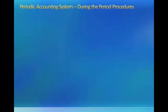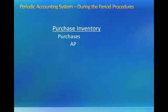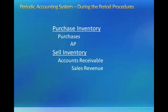In the Periodic system, we purchase inventory by debiting purchases and crediting accounts payable. The difference here, when compared to the Perpetual system, is that the inventory account is not debited — the purchases account is. When we sell inventory, we debit accounts receivable and credit sales revenue. We do not make the entry to record cost of goods sold and lower inventory like we do in the Perpetual system. The only entry required when we sell inventory is to record the sale and accounts receivable.